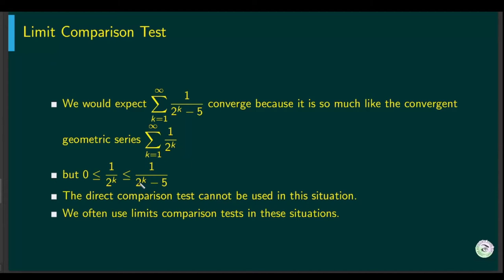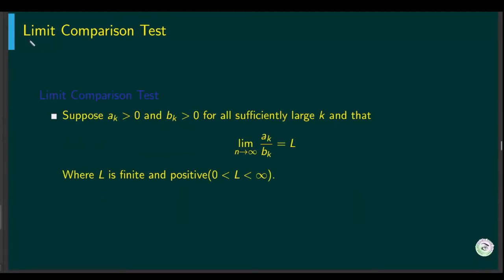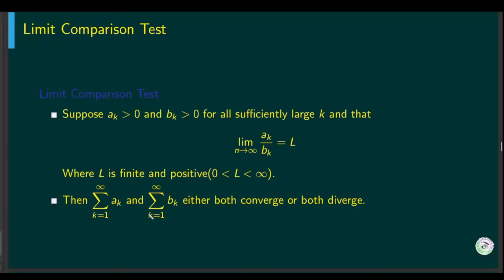Let us look at the limit comparison test. Here we have two series, ak and bk, where they are positive for large enough k. That means after some term, this series will remain positive. Now if we can prove that the ratio of ak over bk goes to a finite limit, finite L, a finite and positive limit, then ak and bk either both converge or diverge. That means if one of them converges, the other one will also converge, and if one of them diverges, the other one will also diverge.